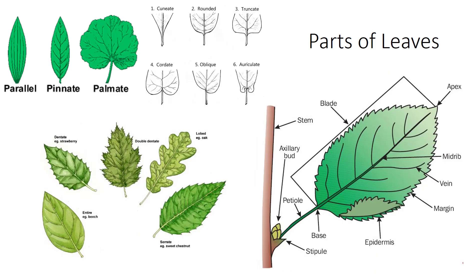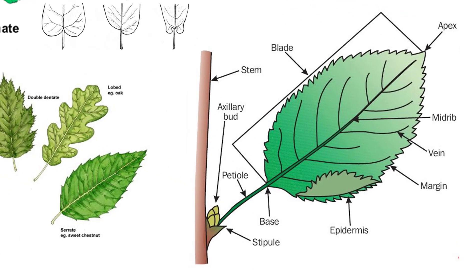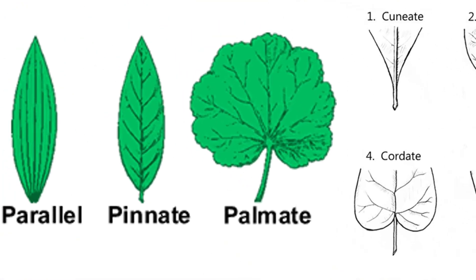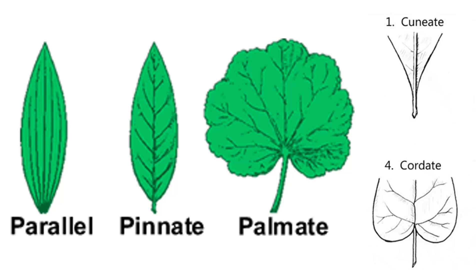Leaves consist of several basic parts that help identify them. The major parts of a simple dicot leaf are listed here. Starting at the stem, the leaf stem or stalk that attaches the leaf is the petiole. The blade is the flat, thin part of the leaf. The midrib is the largest vein located in the middle of the leaf. Veins are used to transport water and nutrients throughout the plant. The different leaf venation patterns found in plants can be parallel, pennate, or palmate.